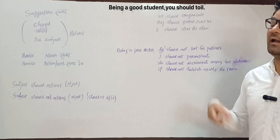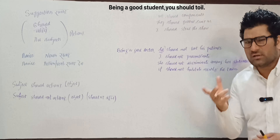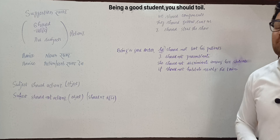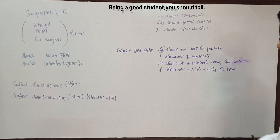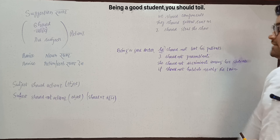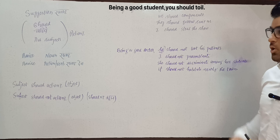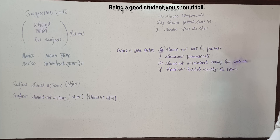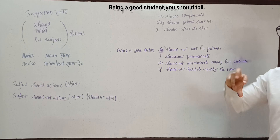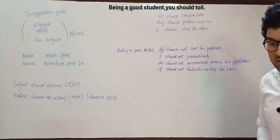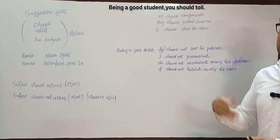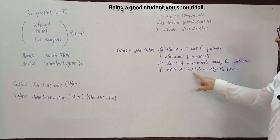She shouldn't discriminate among her students — discriminate means to show bias or make distinctions on the basis of caste, creed, color, or race. And: 'It shouldn't habitate nearby the town.' Note that 'habitat' is the word used for animals living in a place, whereas for humans we use 'live,' 'put up,' 'dwell,' or 'reside.' So 'it shouldn't habitate nearby the town' refers to a wild animal.